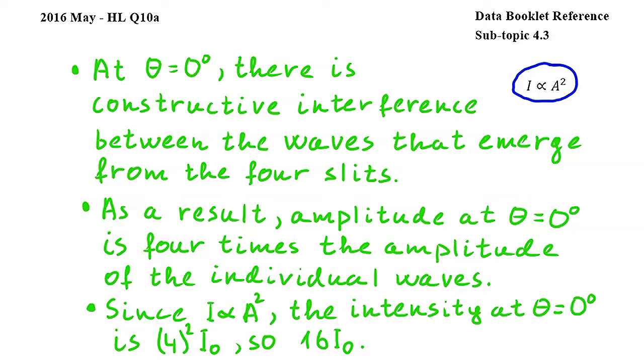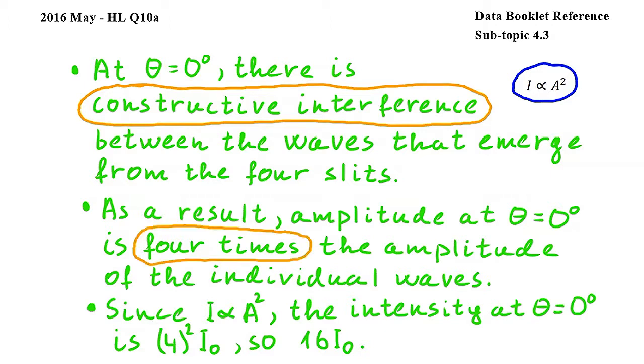In order to earn the three marks on this question, you should make a reference to constructive interference, mention that the amplitude at theta equals zero will be four times the amplitude of the individual waves, refer to this relationship and explain that four squared I0 will result in 16I0 for the intensity.